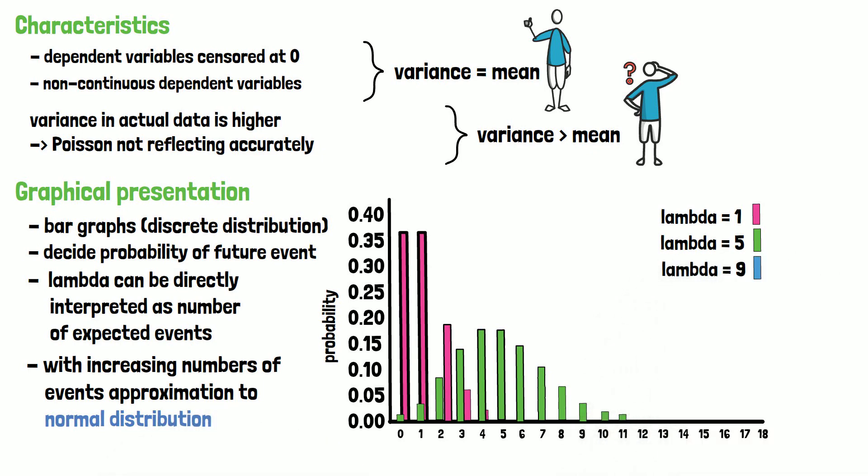From a number of roughly 30 events per interval, a normal distribution is therefore a more feasible approximation, to use the advantages of the normal distribution, which we have shown in a previous video.